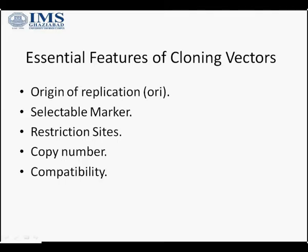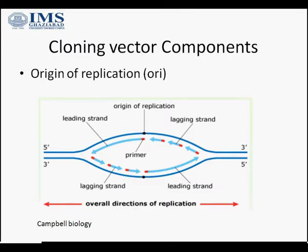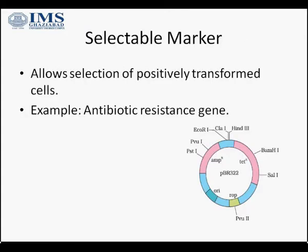Those essential features are: origin of replication (ORI), selectable markers, restriction sites, copy numbers, and compatibility. The origin of replication is a sequence in a genome at which replication is initiated. As you can see in this figure, this is the origin of replication — it is the point where replication actually initiates. This replication can be bidirectional or unidirectional.